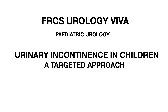The next question: 'What do you think her cause of wetting is?' The cause of wetting in this girl could be a UTI, neurological, anatomical, functional, nocturnal enuresis, or a bladder outflow obstruction. 'Can you define urinary incontinence for me?' It is defined as an involuntary leakage of urine.